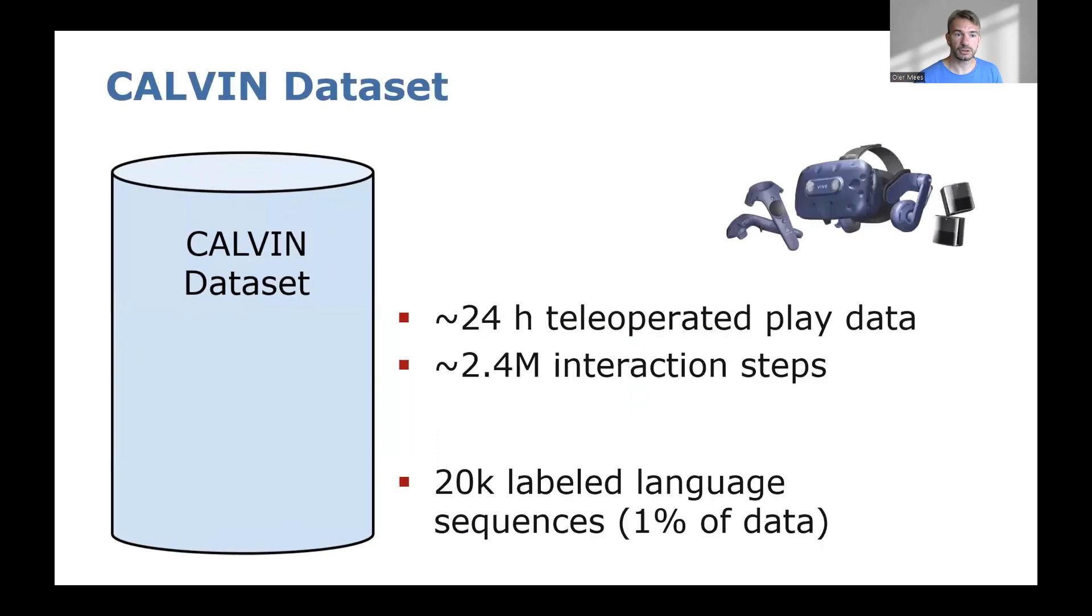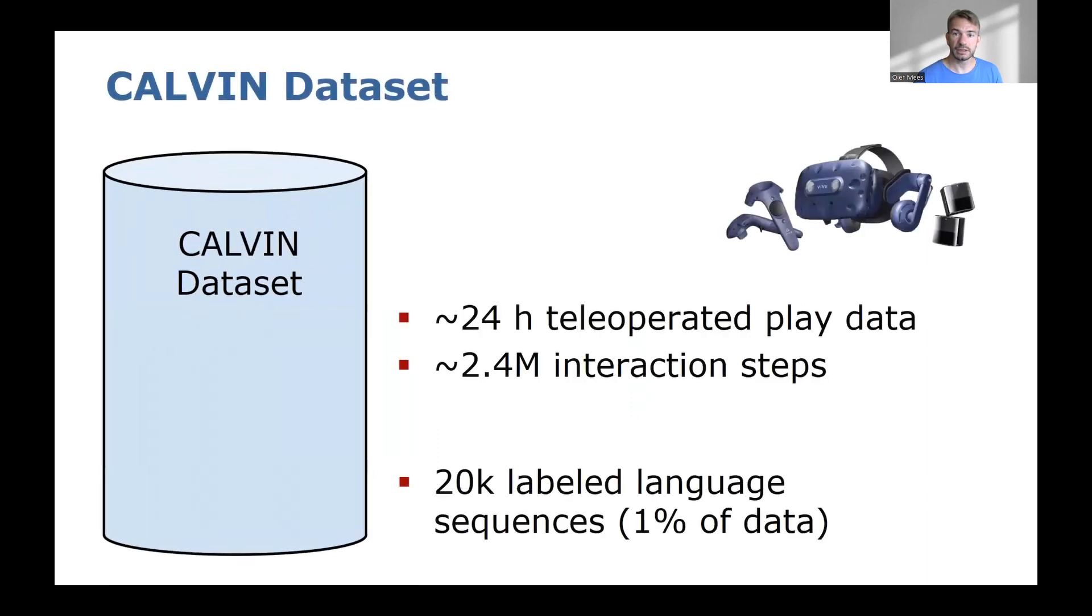Now let's talk about the CALVIN dataset, which consists of 24 hours of human teleoperated play data, which corresponds to approximately 2.4 million interaction steps. We automatically labeled 1% of the dataset with over 400 diverse natural language instructions for 34 tasks, which amounts to 20,000 labeled language sequences.